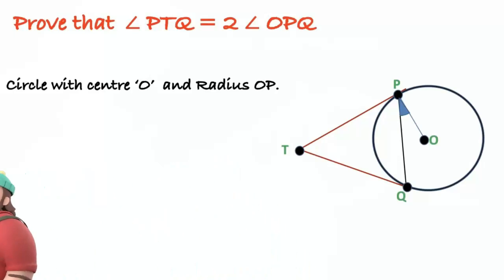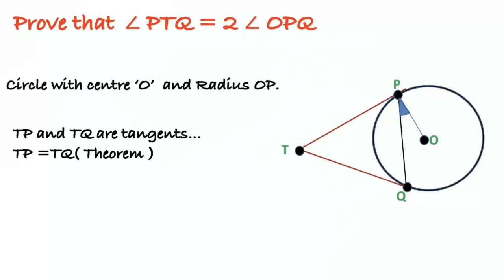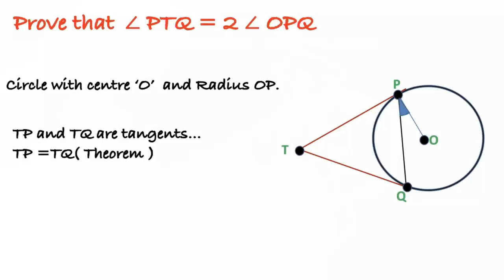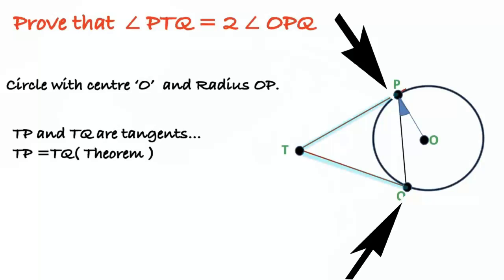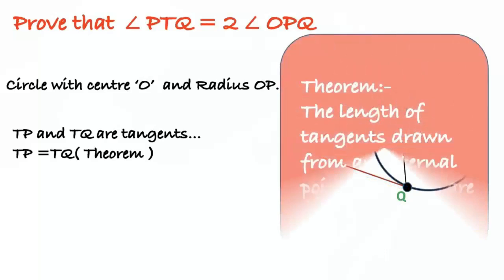We are given a circle with center O and radius OP. Here TP and TQ are tangents — a tangent is a line that intersects the circle at only one point. The lengths of tangents drawn from an external point to a circle are equal, so TP equals TQ.